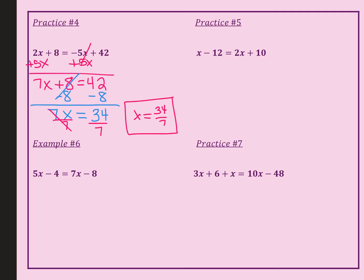What happened here was I moved the 5x over. Then I subtracted 8 from both sides. Ended up with 7x = 34. And when I divided by 7, that was not a whole number and it's not a pretty decimal, so I went ahead and left it as a fraction, 34/7.